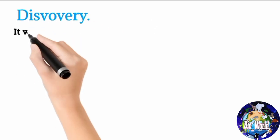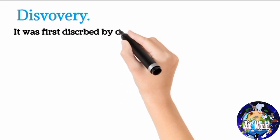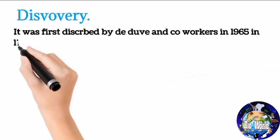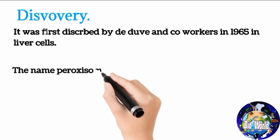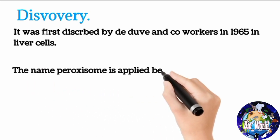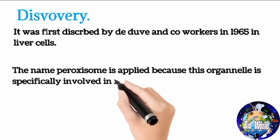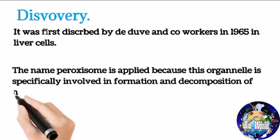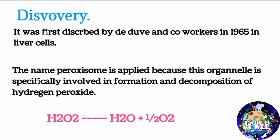Discovery: Peroxisomes were first described by de Duve and co-workers in 1965 in liver cells. The name peroxisome was applied because this organelle is specifically involved in the formation and decomposition of hydrogen peroxide.